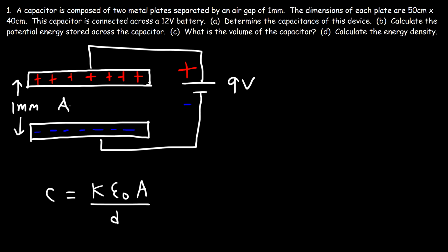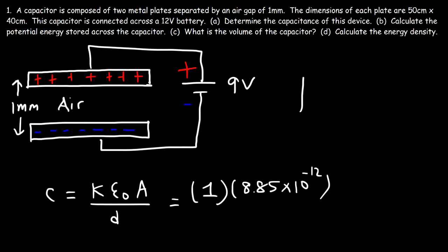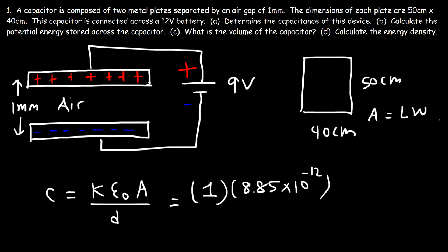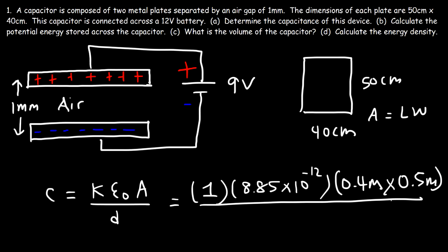The insulating material between the two plates is air, so the dielectric constant for air is approximately one. The permittivity of free space is 8.85 times 10 to the negative 12. The area of the plates measures 40 centimeters by 50 centimeters, so the area is length times width. We need to convert centimeters to meters by dividing each number by 100: 40 divided by 100 is 0.4 meters, and 50 divided by 100 is 0.5 meters. The separation distance is 1 millimeter, which is 0.001 meters.